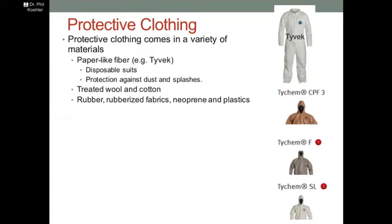Let's talk about protective clothing. Protective clothing comes in a variety of materials. A lot of people are using Tyvek, which is a paper-like fabric — disposable suits or coveralls — providing protection against dust and splashes. There are also treated wool and cotton materials, and rubber or rubberized fabrics like neoprene or plastic.